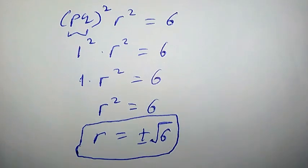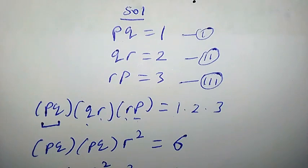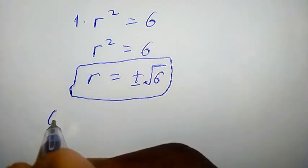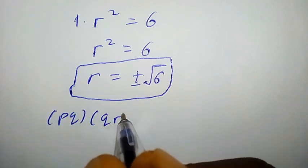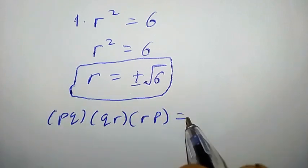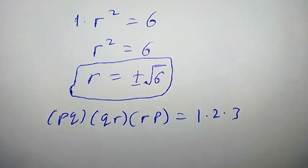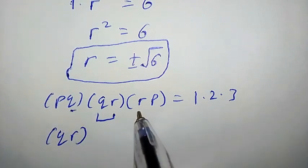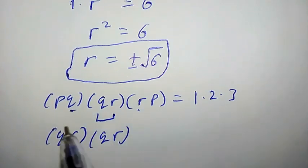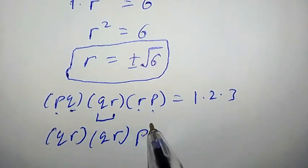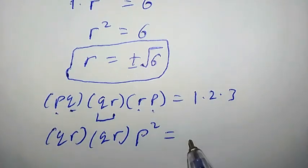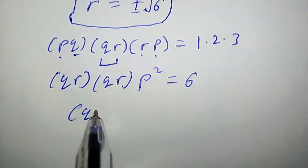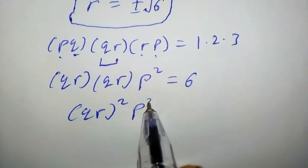Let us solve for the other variables using the same trick — multiplying the left-hand sides together and the right-hand sides together. PQ times QR times RP equals 1 times 2 times 3. Now we fix QR: Q times R is QR, and P times P is P squared, equal to 6. So QR squared times P squared equals 6.